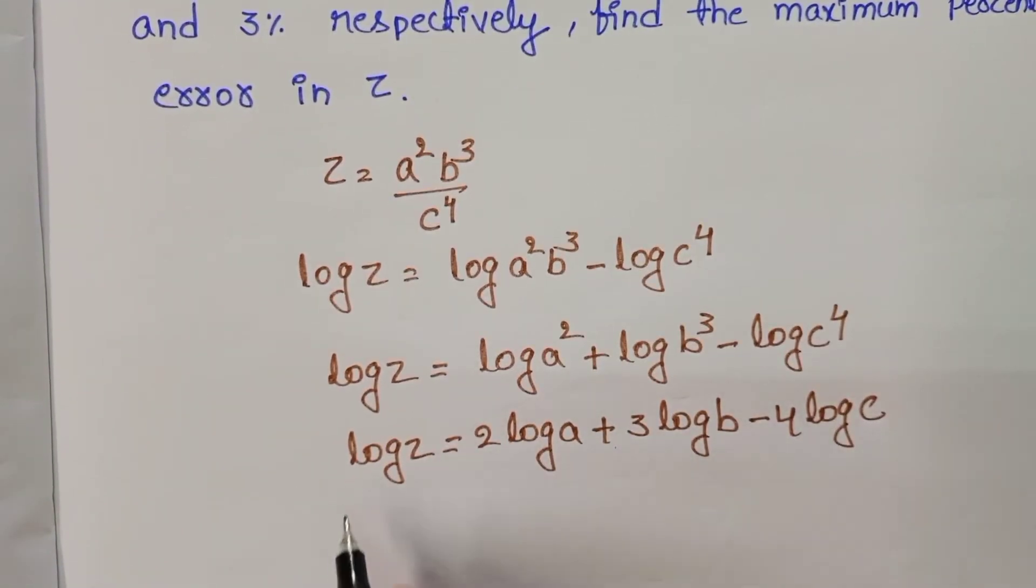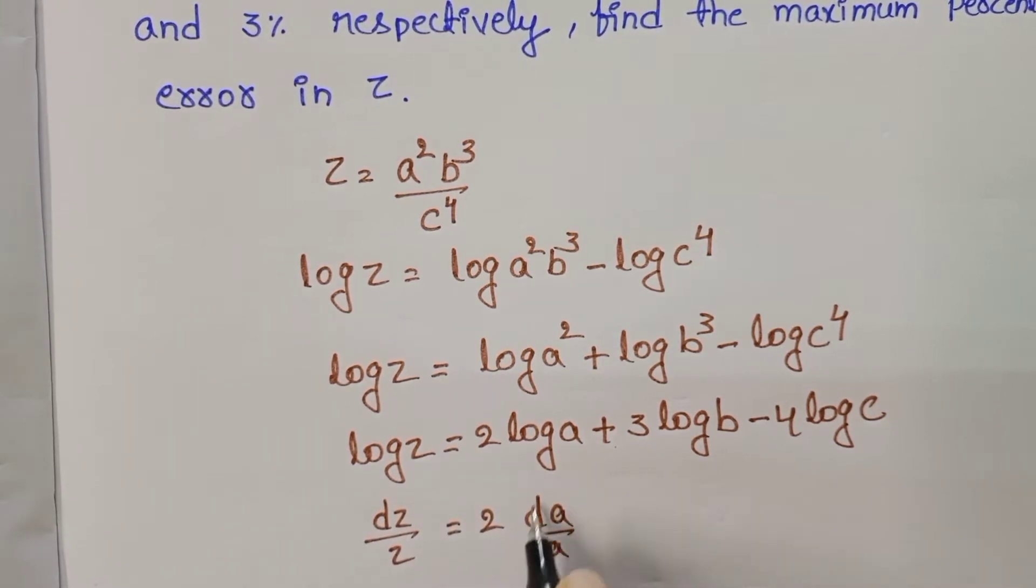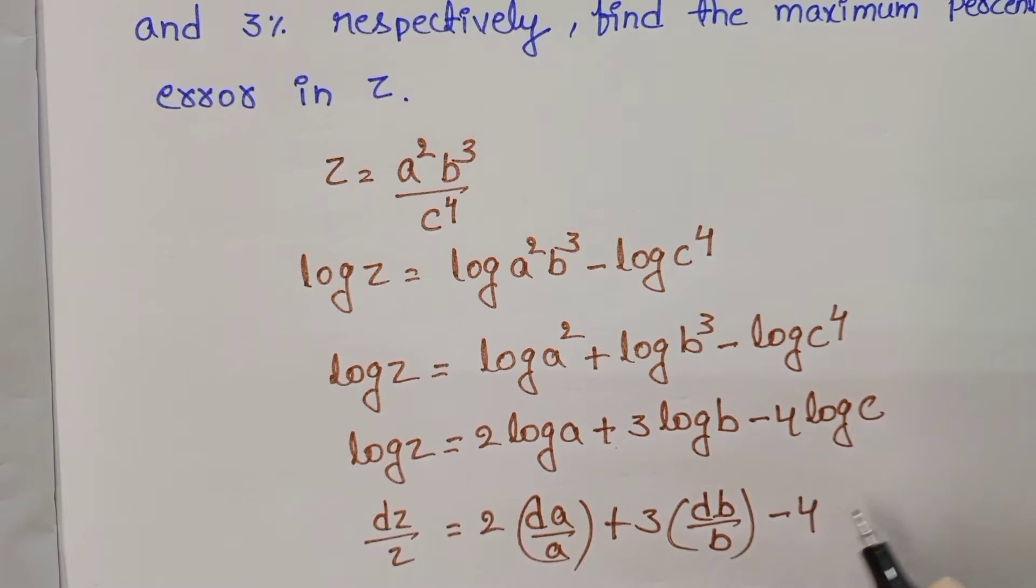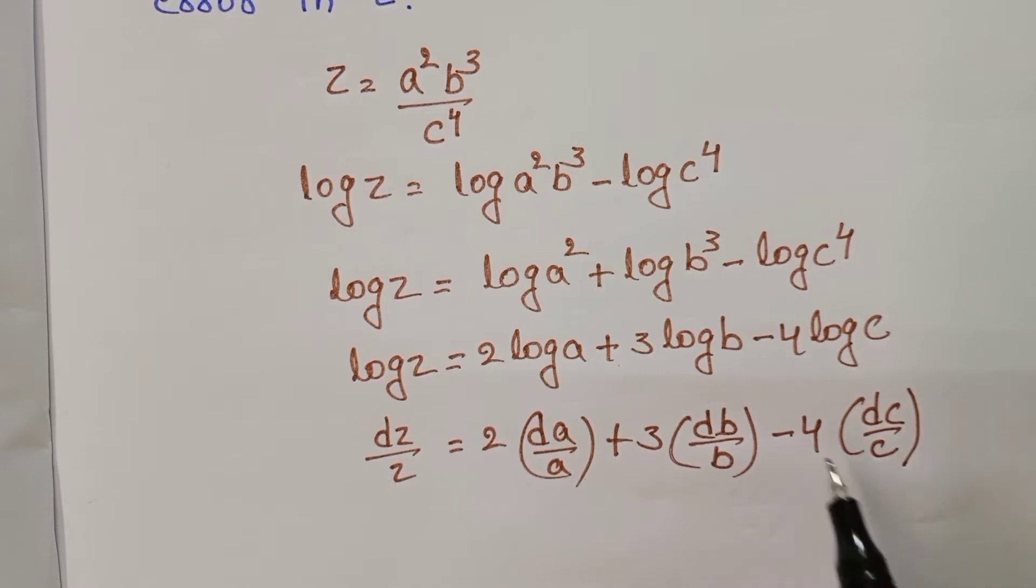Let me differentiate on both sides. DZ by Z equals 2 times DA by A plus 3 times DB by B minus 4 times DC by C. Here minus signs are there, but maximum percentage error is always positive, we have to take the maximum value.